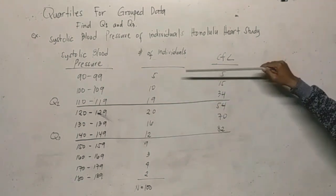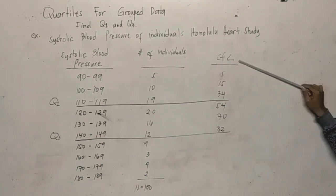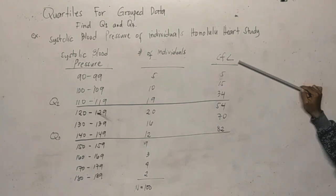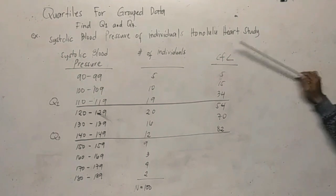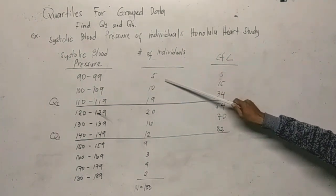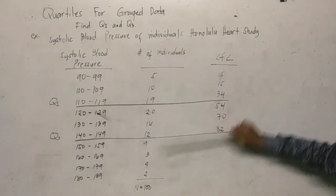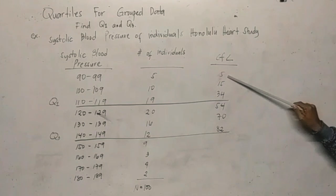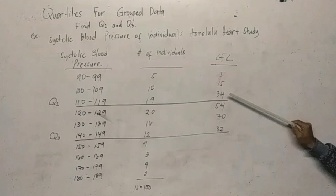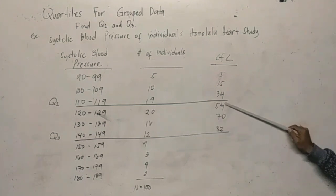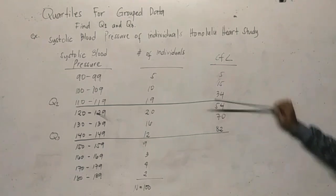Before solving, we first fill in the cumulative frequency below column, just as we do when finding the median. So: 5, then 5 plus 10 is 15, 15 plus 19 is 34, 34 plus 15 is 54, 54 plus 16 is 70, 70 plus 12 is 82. We stop here for now.